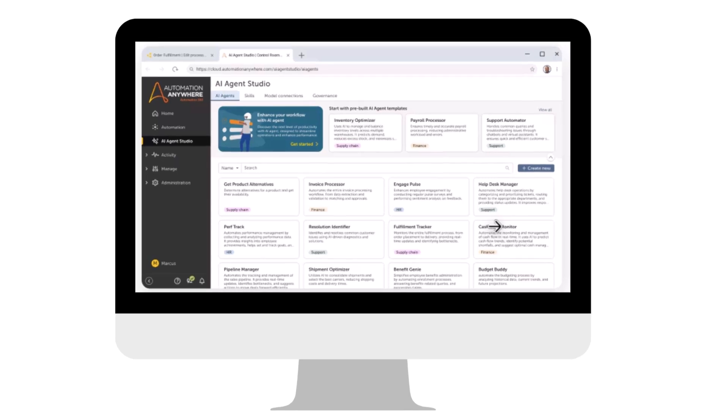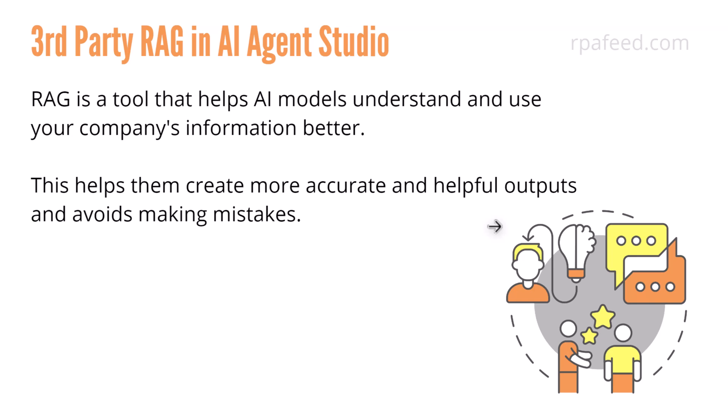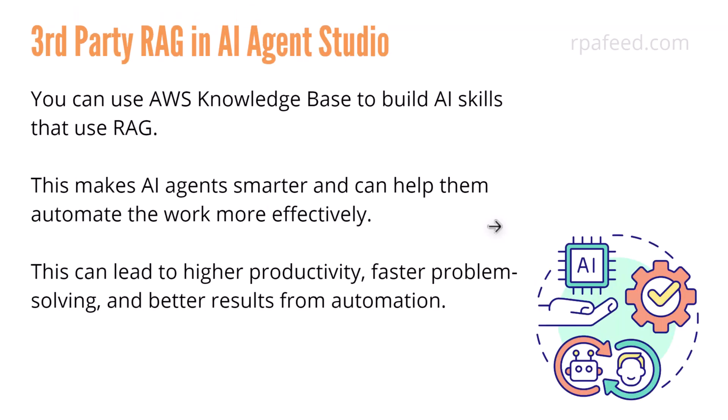Now coming to AI Agent Studio. We have a couple of enhancements and features. One is third-party RAG — retrieval augmented generation. It's a tool that helps an AI model understand and use your organization's information in a better way, creating more accurate and helpful output while avoiding mistakes. You can leverage AWS knowledge base to build AI skills that use RAG, making AI agents smarter. As you feed more data to the AI agent, this leads to higher productivity, faster problem solving, and better results from automation.